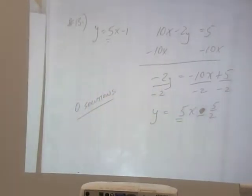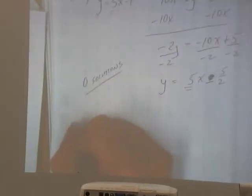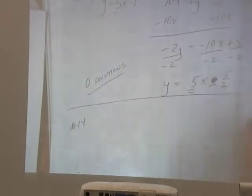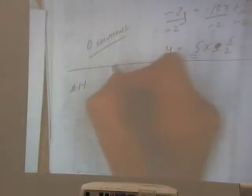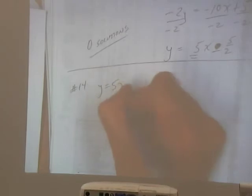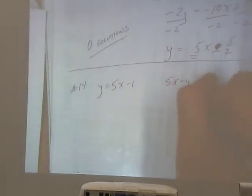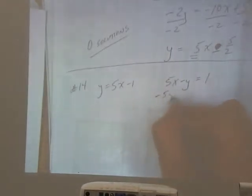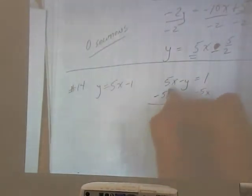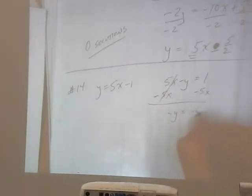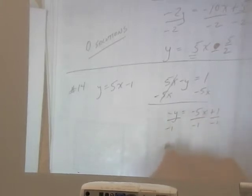Alright, number 14. Alright, same thing. And then we got 5x minus 1 equals 1. So we'll subtract the 5x over. Negative y is equal to negative 5x plus 1. And we'll divide everything by negative 1. So y is equal to 5x minus 1.